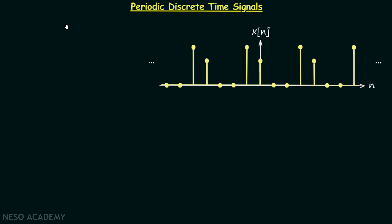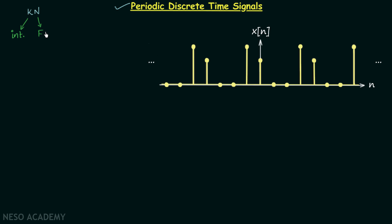A discrete time signal is said to be periodic if the signal remains the same after performing the left shifting or the right shifting operation by k times N. Here k is an integer, and N is known as the fundamental time period of the discrete time signal. One important point is that the fundamental time period N is also an integer.